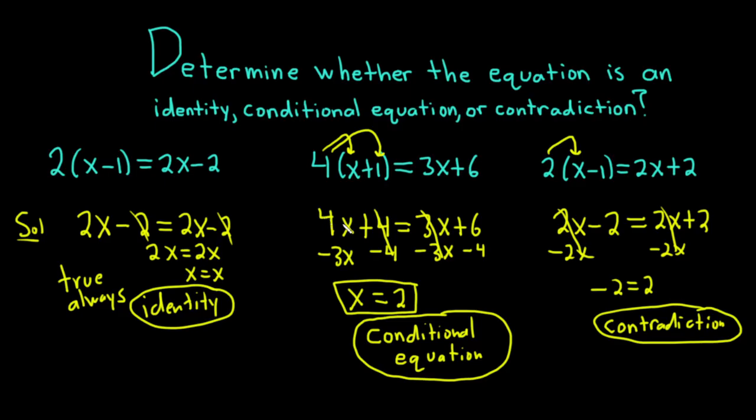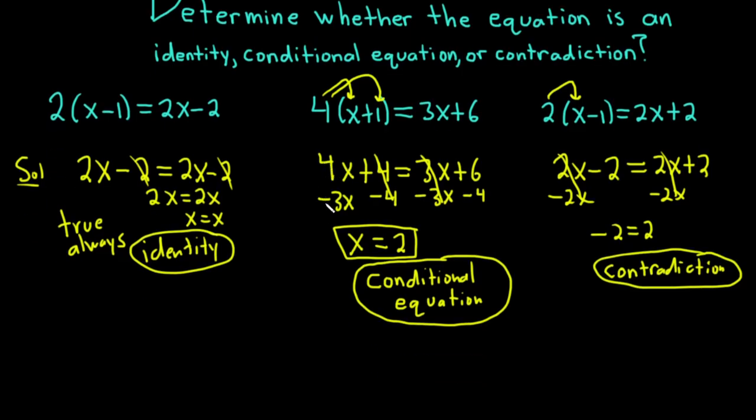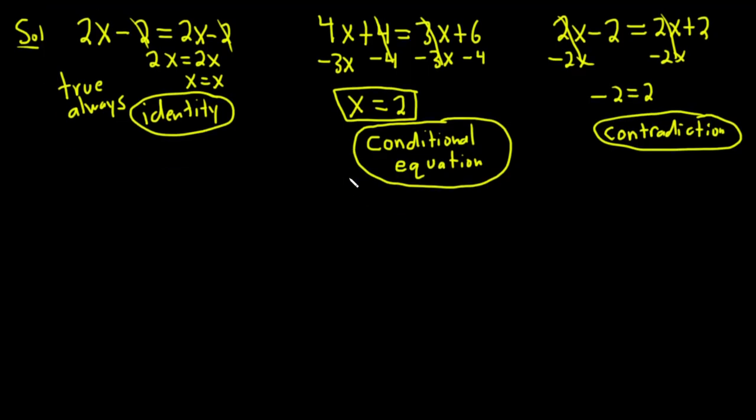Let me just do one more example to clear that up because I do think it's a very confusing point. Let's say we had something like 1 over x equals x over x squared. Let's go ahead and figure out if this is an identity, a conditional equation, or a contradiction solution.